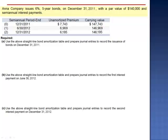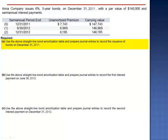Exercise 6. A company issues 6% 5-year bonds on December 31, 2011, with a par value of $140,000 and semi-annual interest payments. We are asked to use the straight-line bond amortization table and prepare journal entries to record the issuance of bonds on December 31, 2011. These bonds sold for $147,743.